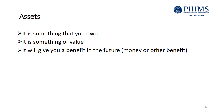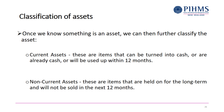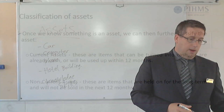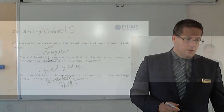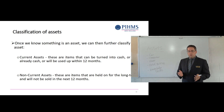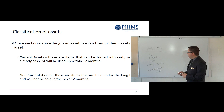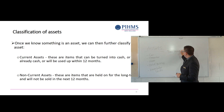Once we know something is an asset, we can break it down into two parts. There are current assets and non-current assets. Current assets are items that we can turn into cash, that are already cash, or that are going to be used up within 12 months. There are three main types: the first is money in the bank account — that is a current asset.